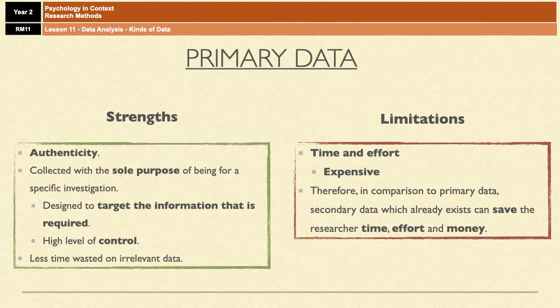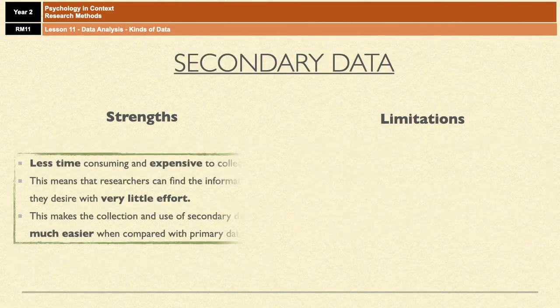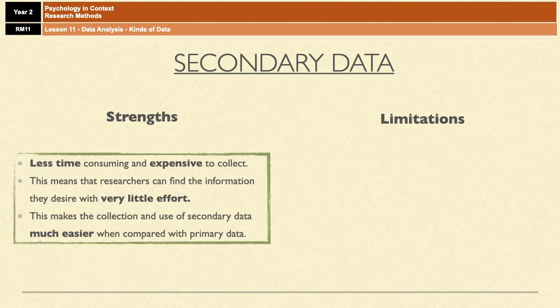Because of that, using secondary data — which already exists — could save the researcher a lot of time, a lot of effort, and a lot of money. Secondary data is much less time consuming and much less expensive to collect. That means researchers can find the information they need with very little effort, which overall makes the collection and use of secondary data much easier when compared with primary data.